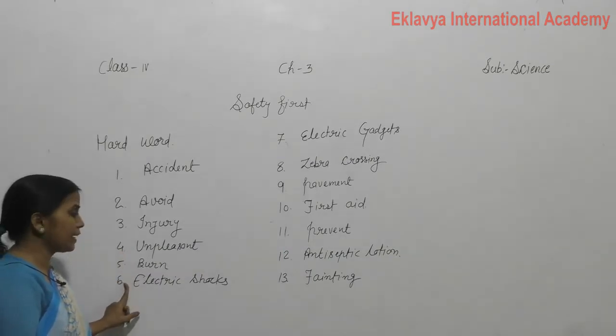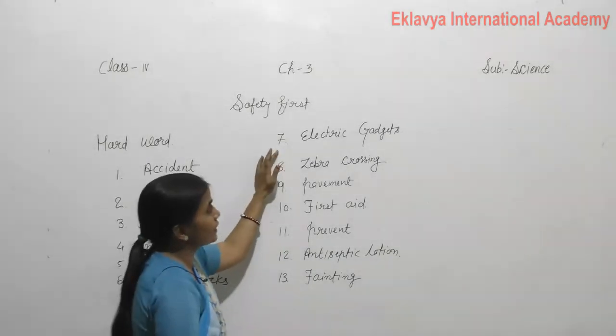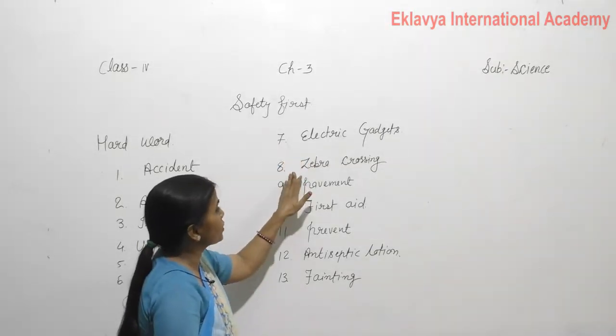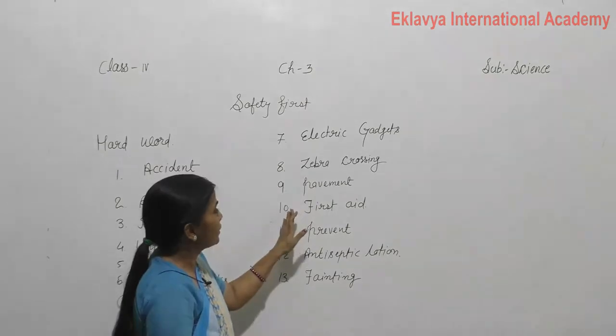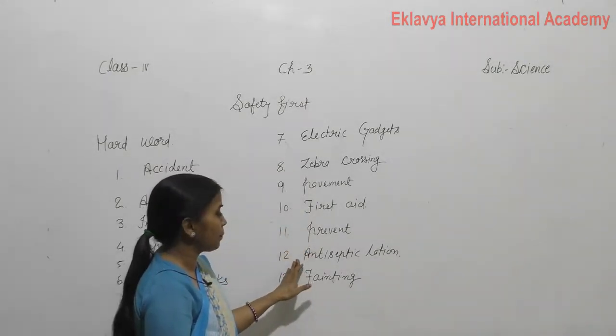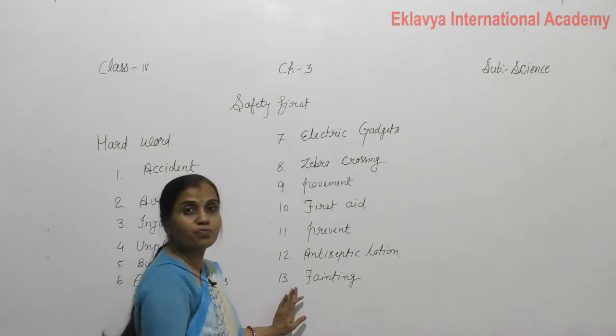Sixth is electric shock, seventh is electric gadgets or electric appliances, eighth is zebra crossing, ninth is pavement, tenth is frosted, eleventh is prevent, twelve is antiseptic lotion, and thirteen is panting.